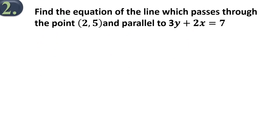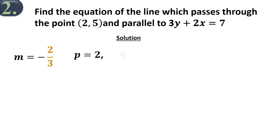Question 2: Find the equation of the line which passes through the point (2, 5) and parallel to 3y plus 2x equals 7. The solution. From the question, the gradient m equals negative 2 over 3, the x-coordinate p equals 2, and the y-coordinate q equals 5.